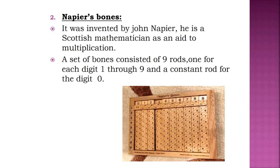The second evolution is Napier's Bones, invented by John Napier, a Scottish mathematician. It was used for multiplication. Napier's Bones consists of a set of nine rods — one for each digit from one to nine — and a constant rod for the digit zero. This device was used primarily as a multiplication table.